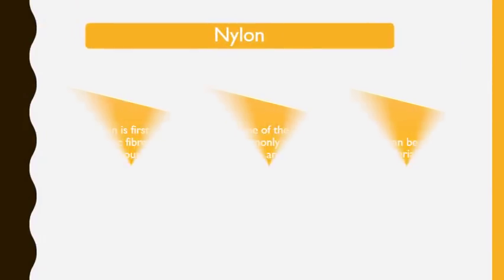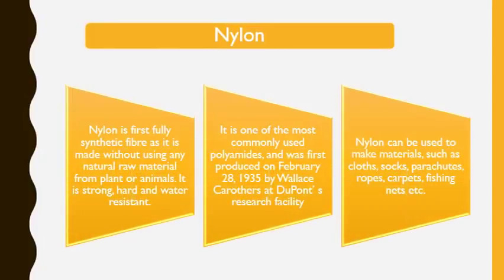Now we will talk about nylon. Rayon was extracted from wood — the cellulose was extracted from wood — but nylon was the first fully synthetic fiber made by human beings. It is very strong, hard, and water resistant. It was first produced in 1935 at DuPont's research facility. So both nylon and rayon were actually promoted by DuPont.